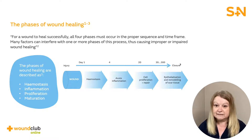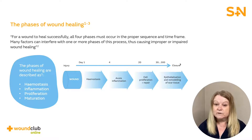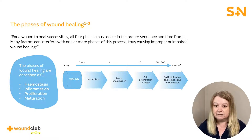Many factors can interfere with one or more phases of this process, meaning the wound could fail to heal. The first phase of healing, haemostasis, begins immediately after the wound occurs. Vascular constriction and fibrin clot formation occurs to stop the wound from bleeding. The surrounding wound tissue releases pro-inflammatory cytokines and growth factors to start the wound healing process.